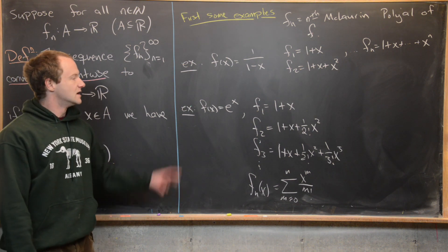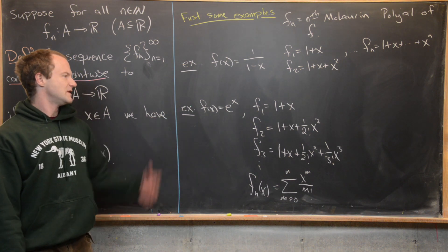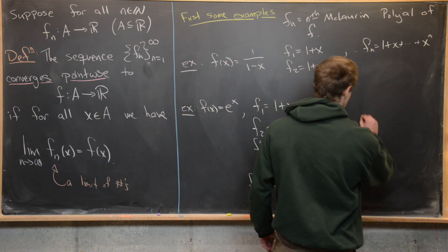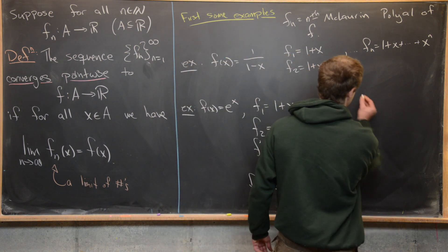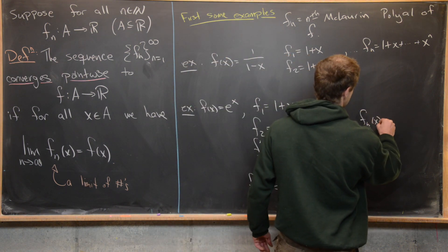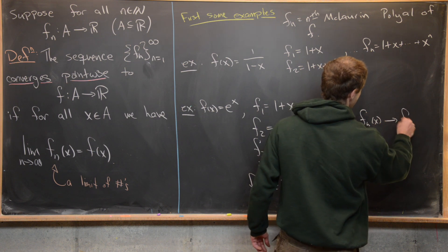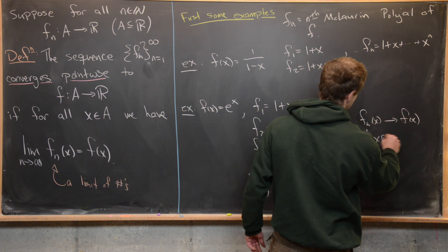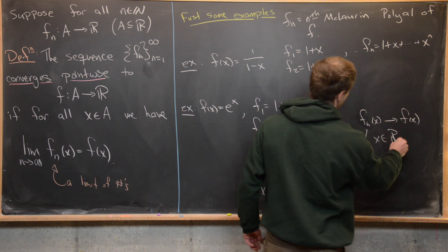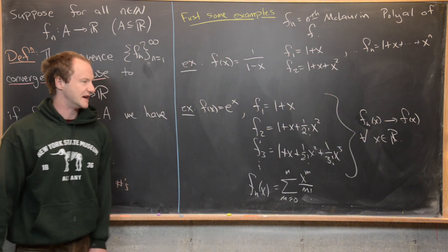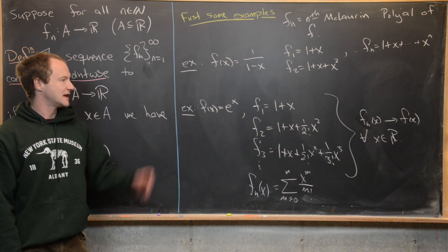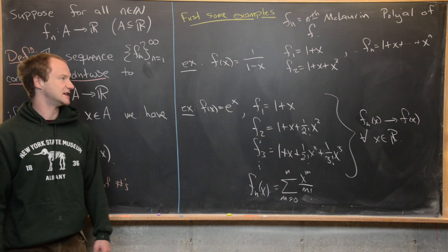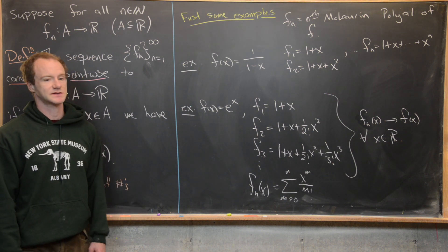These are like straightforward examples. Notice in this case, f_n(x) approaches f(x) = e^x for all x in the real numbers, because we have an infinite radius of convergence here. Now we'll look at examples you would not have seen in a Calculus 2 type class.